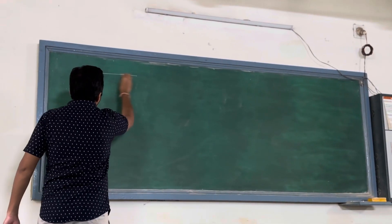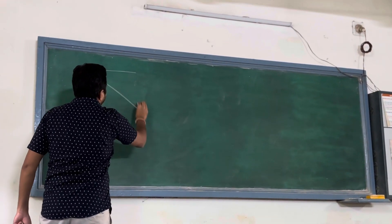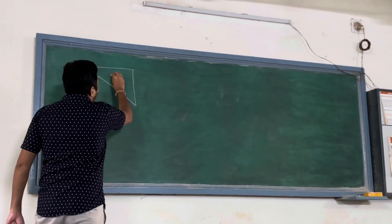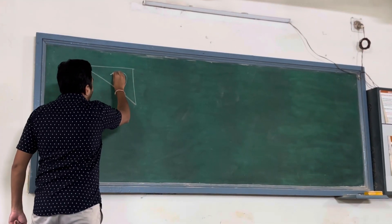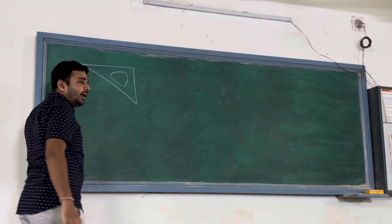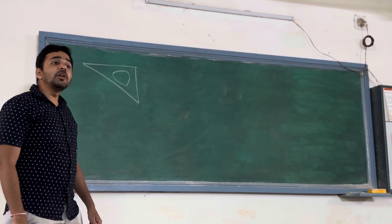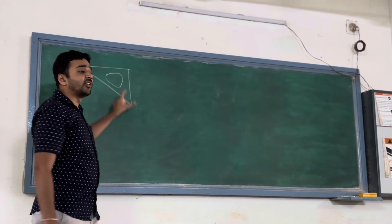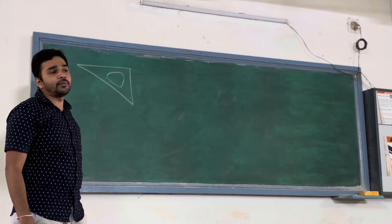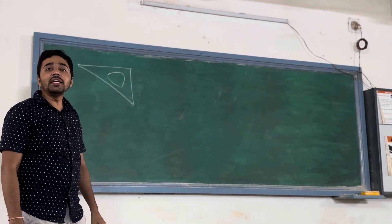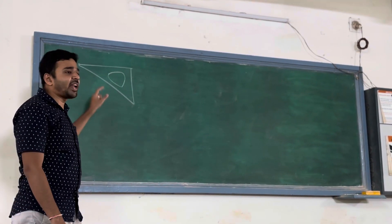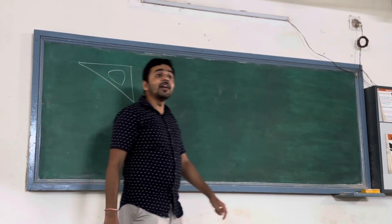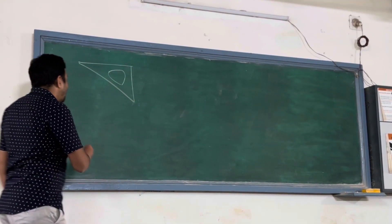With Einthoven's triangle, he imagined the heart in this triangle. Because the impulse was generating in this direction only, therefore he imagined this triangle. He also gave us bipolar leads.